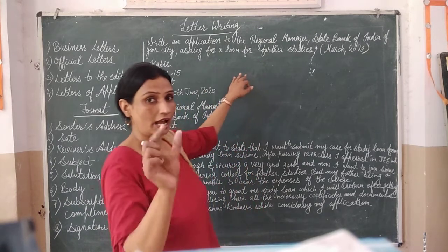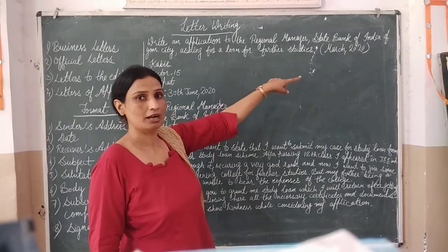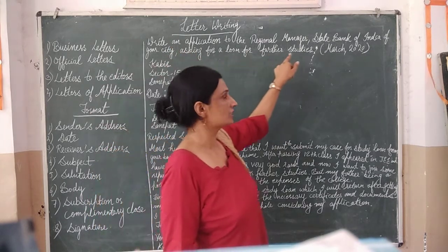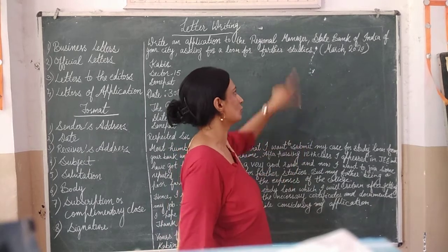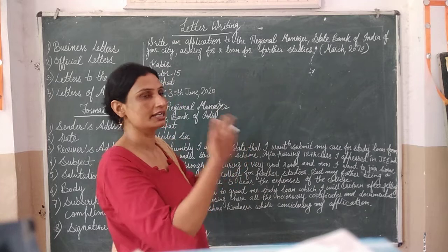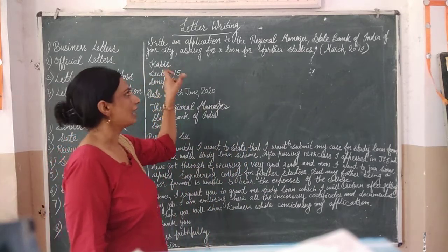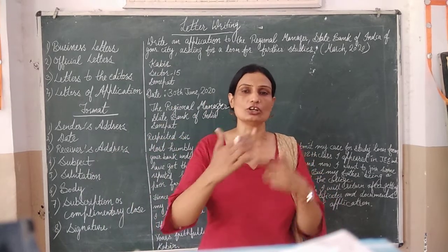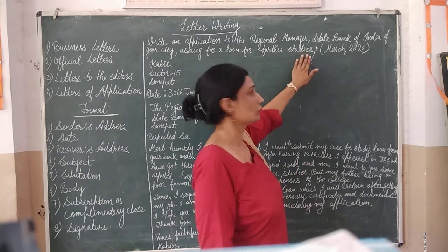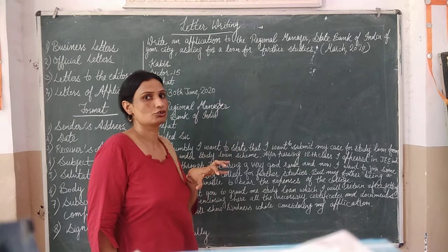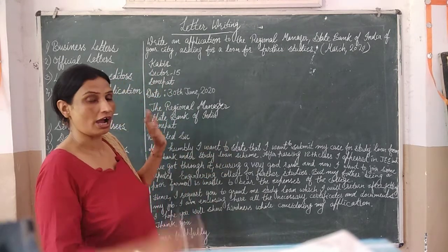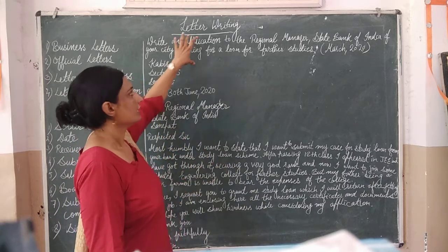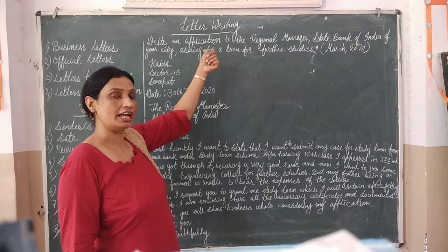Now we will discuss a sample letter. Write an application to the Branch Manager of the State Bank of India for a student education loan. As discussed earlier, you have to write the sender's address first. Initially, write the sender's details at the top. If the name is not given, you write accordingly based on your choice.